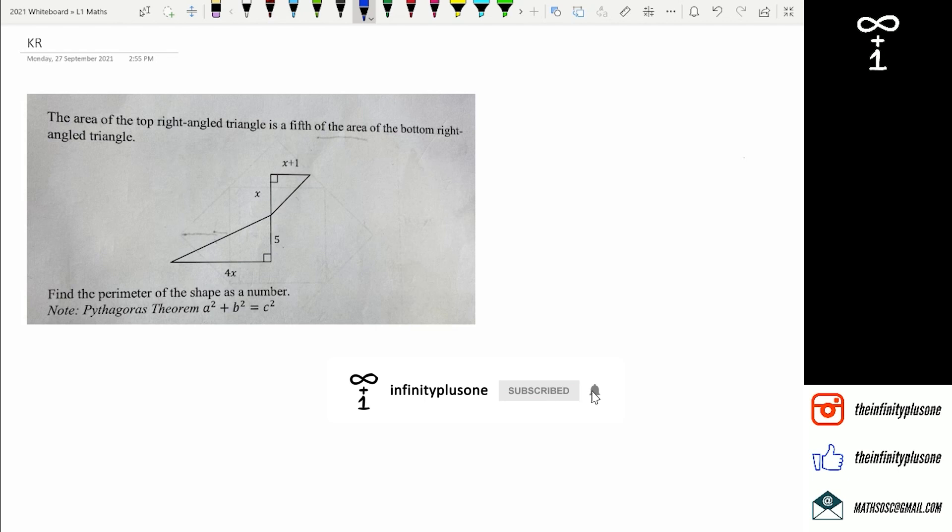What we've got is the area of the top right angle triangle is a fifth of the area of the bottom right triangle. The first thing I'm going to do is work out the area of the blue triangle here.